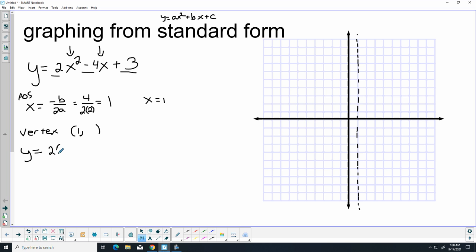So 2 times 1 squared minus 4 times 1 plus 3. It's going to give me 2 minus 4 plus 3, which is going to be 1. So my vertex is (1, 1). Put a dot at (1, 1).